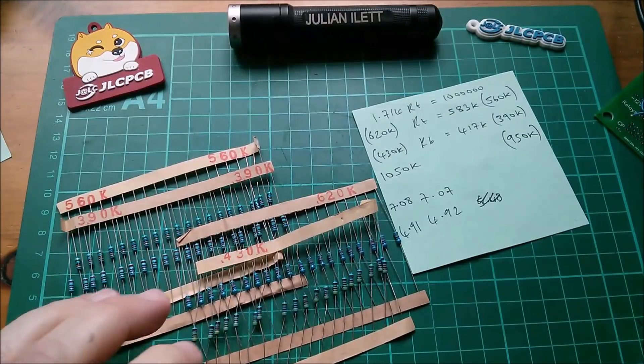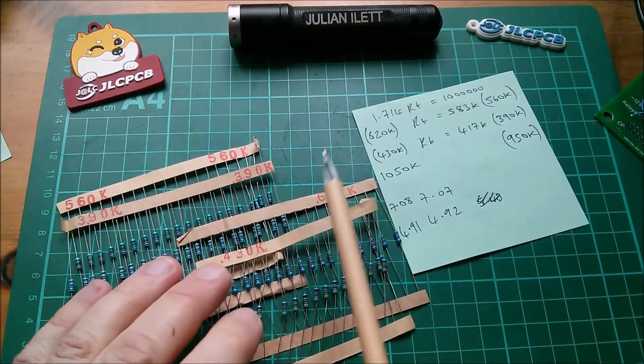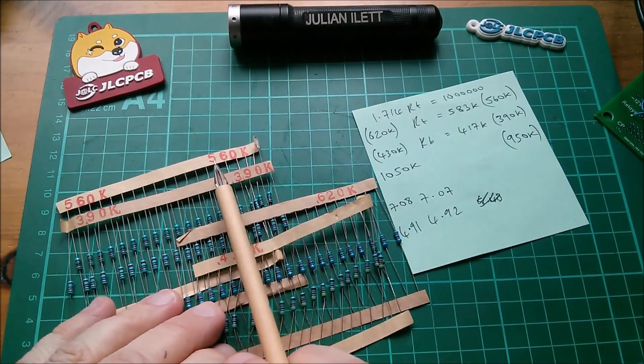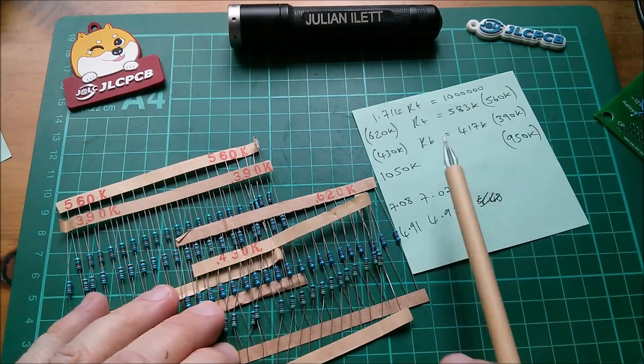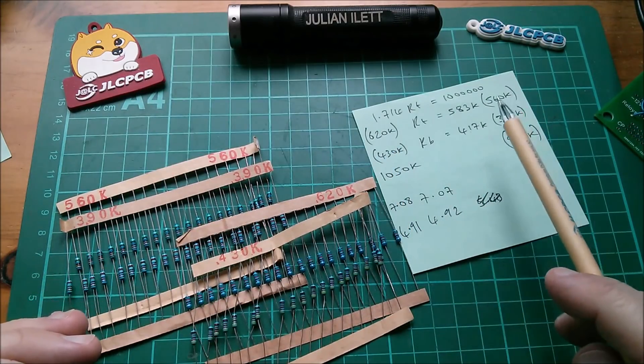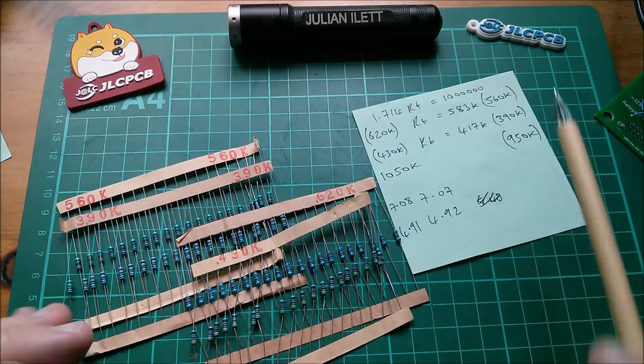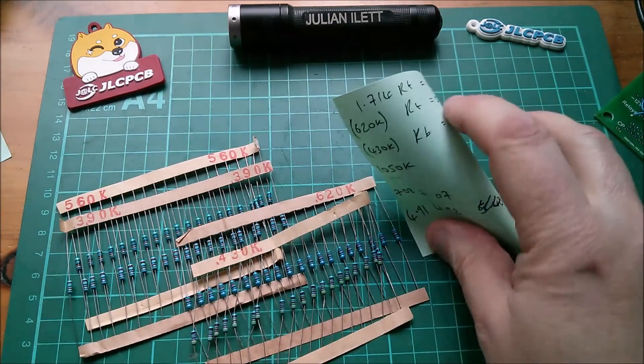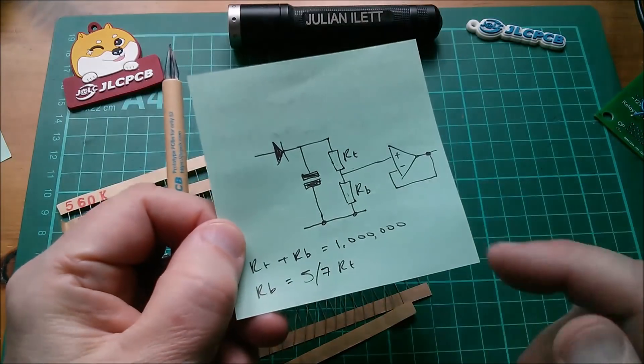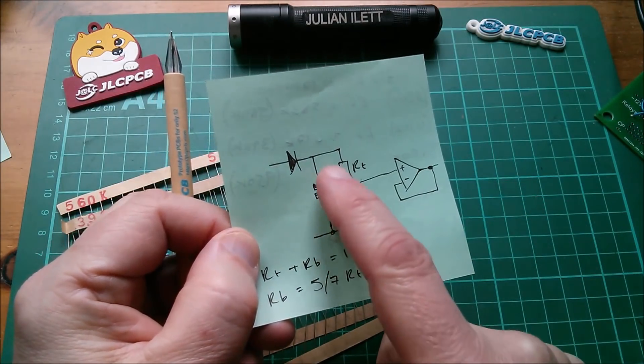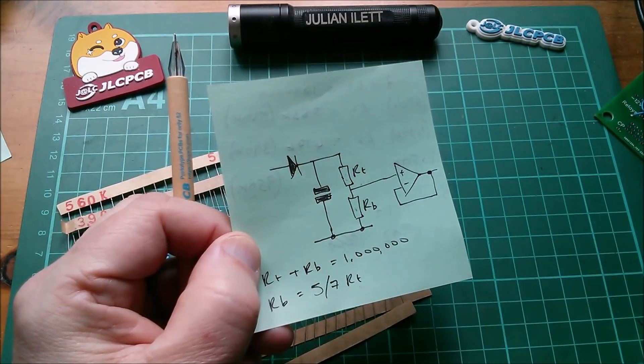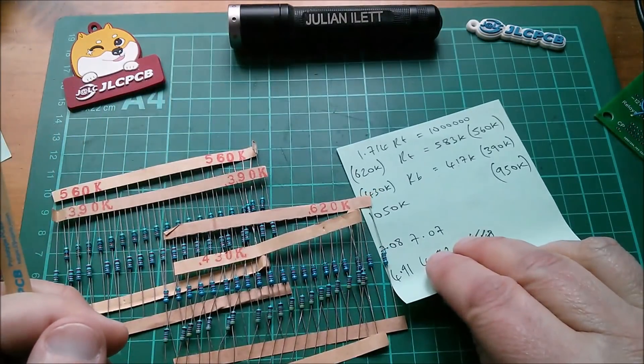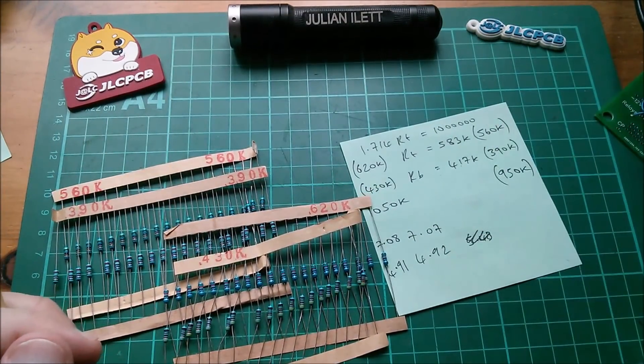My only concern is that finding a 430k resistor could be tricky. Let's have a look. Well, I have found this must be an E24 series: I found the 560, the 390, the 620, and the 430k. But the numbers don't lie, this ratio is slightly more accurate. Is there any downside to having a slightly lower value resistor here across that capacitor than a higher one? Not really, so I think I'll go for 560k and 390k.